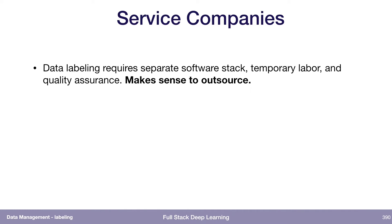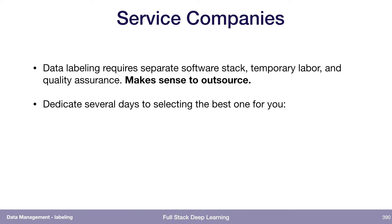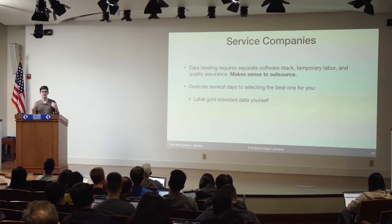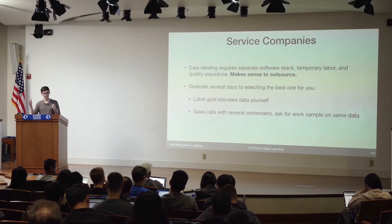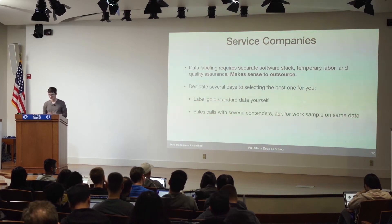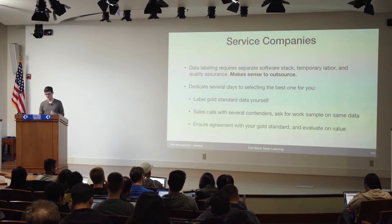Data labeling is really its own project. You need a separate software stack for your annotation interface, maybe some kind of quality control software, you have temporary labor needs and quality assurance needs — so you don't want to build all of that yourself. I think it makes sense to outsource it. What I would do is dedicate several days to picking service companies that could be in the running, then assign each one a data sample. But first I would label gold standard data myself, to understand the full complexity of what's in the data and how I'd want it labeled. Then I'd send that same gold standard data set to the different contenders and compare how they did it versus how I did it. Pricing could be a big factor too.